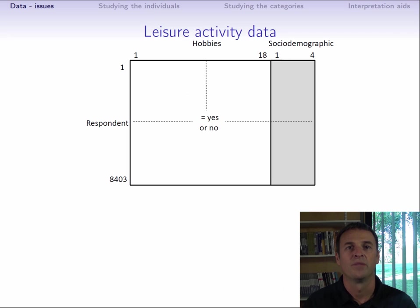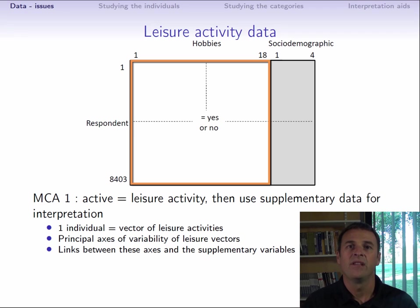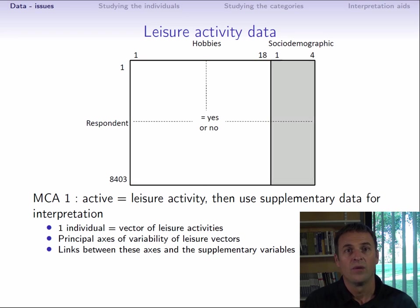Before starting to perform multiple correspondence analysis, we have to ask ourselves what type of analysis we want to do exactly, considering that the variables naturally fall into two groups, the activity group and the supplementary variable group. One way to go about things is to consider the activity variables as active variables and the other variables as supplementary ones. If we run an analysis like this, the individuals are only examined using the activity variables. In other words, an individual is an activity profile. These activity profiles exhibit a certain variability, and we will go and look for the principal dimensions of variability in these profiles. Once this has been done, we then bring back the supplementary variables for illustrative purposes, and the question becomes to find links between the dimensions of variability of the activity profiles and the supplementary variables.